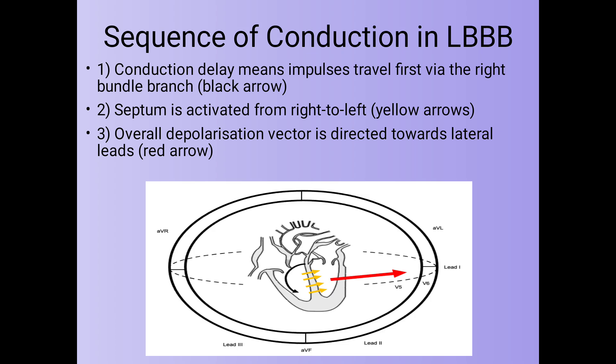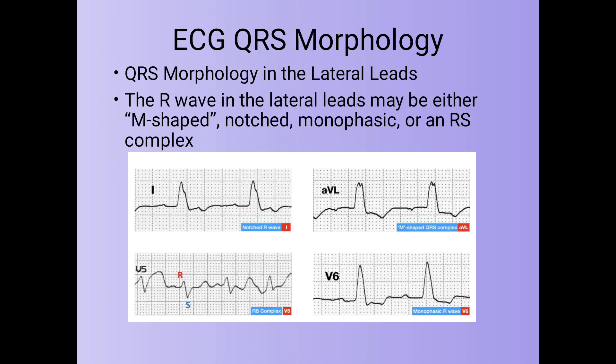The sequence of conduction in Left Bundle Branch Block: conduction delay means impulses travel first via the right bundle branch (shown with black arrow), then the septum is activated from right to left (yellow arrows), and the overall depolarization vector is directed towards the lateral leads (red arrow). In the ECG, QRS morphology in the lateral leads (lead 1, aVL, V5, V6) shows notched M-shaped R waves — mostly V5 and V6 — as monophasic or M-shaped notched R wave complexes.